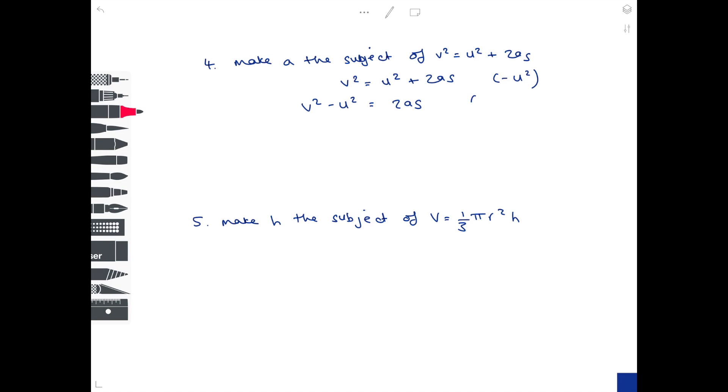To get the 2as by itself we need to minus u squared from both sides. And then to get a by itself we need to divide both sides by 2s. And therefore that is your final answer and I'm just rewriting it on the other side. So it's better written.